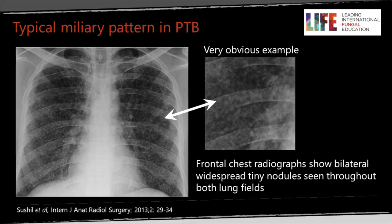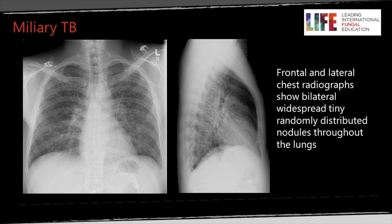On the left is a typical radiograph showing innumerable tiny nodules scattered throughout the lungs. Remember that the thickness of the pulmonary parenchyma varies, being thinner at the apices, the bases, and at the edge of the lungs, so the actual number of nodules may appear to change slightly. But the distribution is very characteristic — it affects all the lungs. Here's a slightly more subtle example, but still you can appreciate on both the lateral and frontal film that there are numerous tiny, slightly less well-defined nodules.